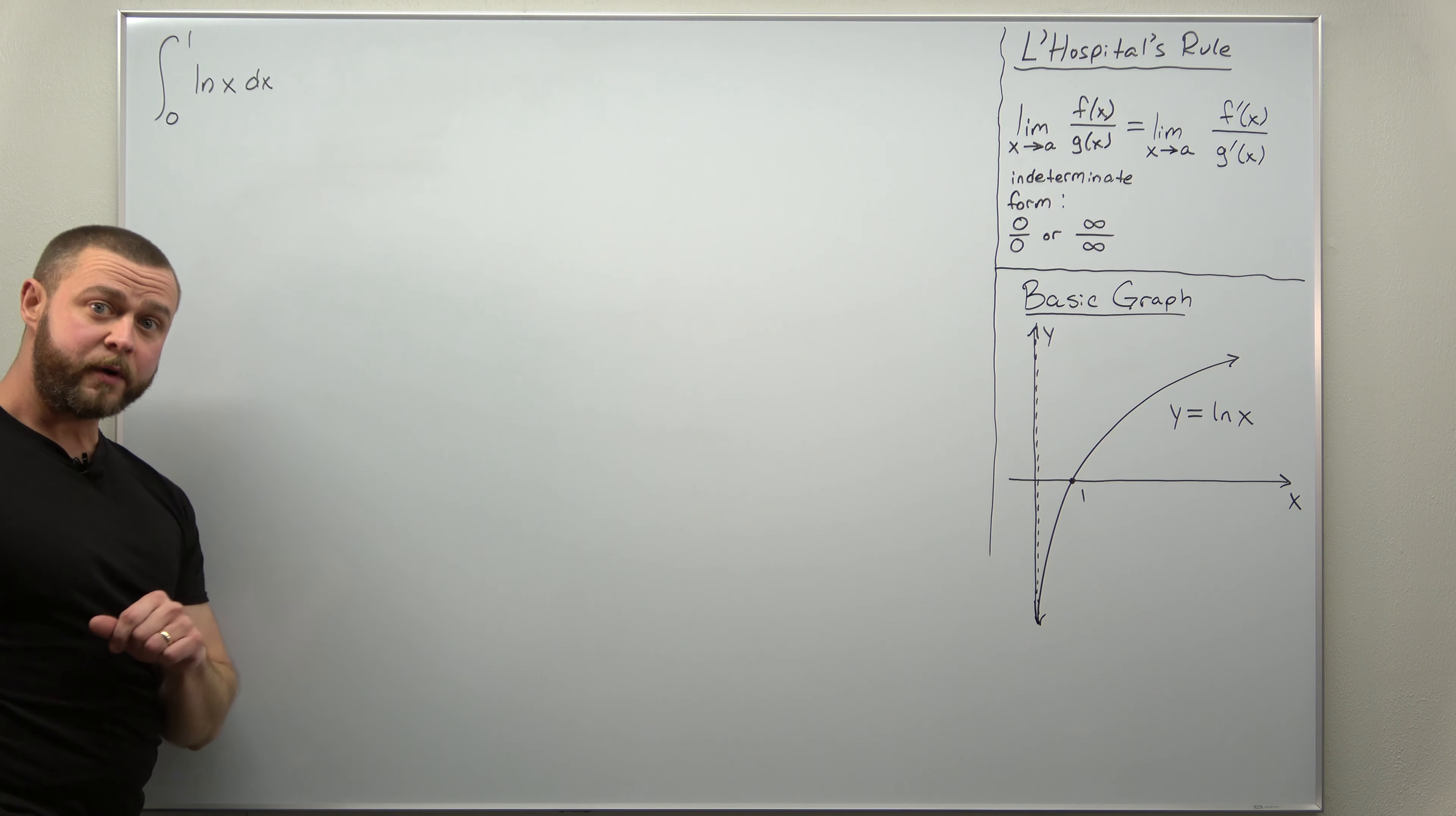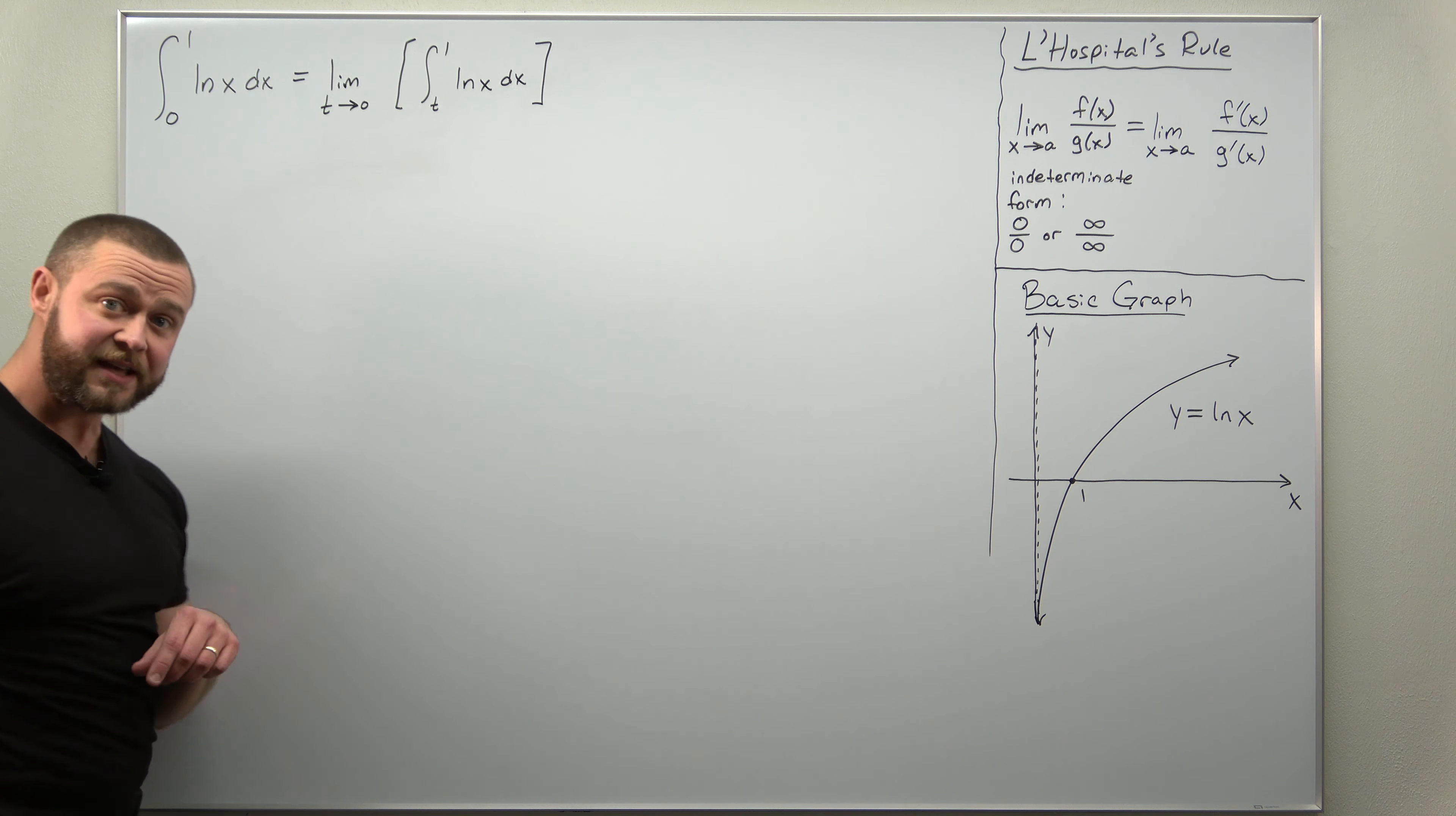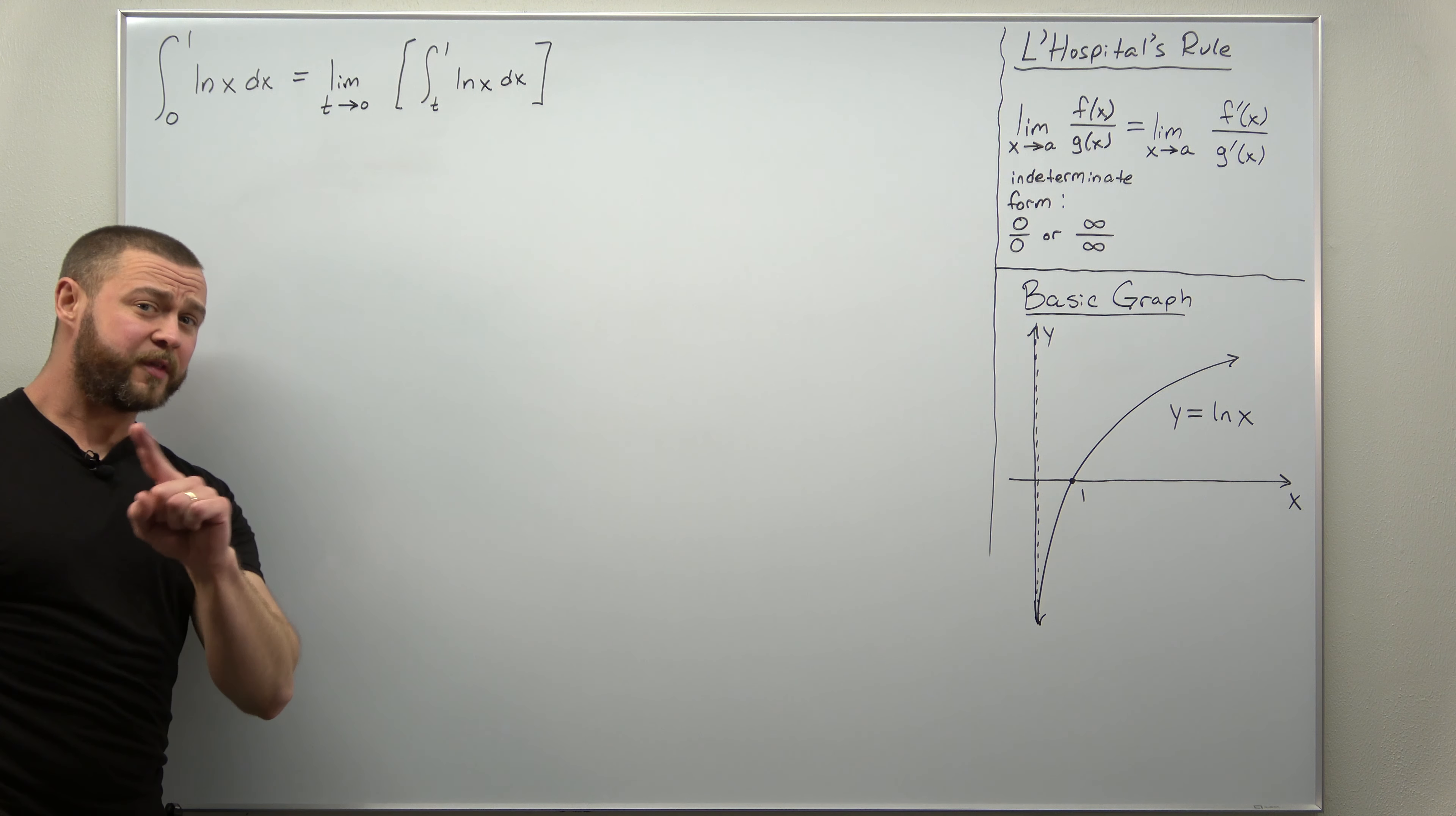With that in mind, we know how to set this up. We're going to replace 0 with t and then take a limit as t approaches 0. So let's set that up: limit as t approaches 0, and then we have an integral from t to 1 of natural log of x dx. For my students, I'm going to expect that they've set up their limit correctly, and here we want to make sure that we set that up correctly as either a limit from the right or the left of 0.